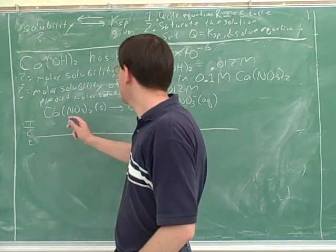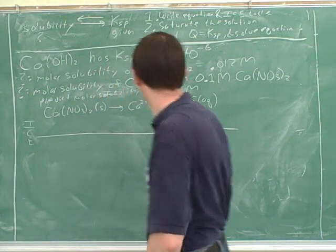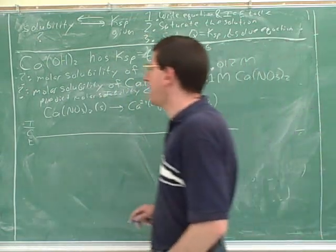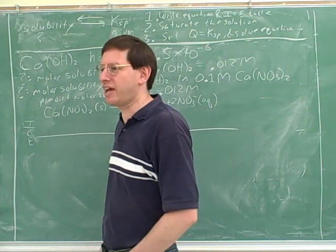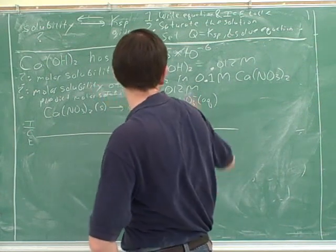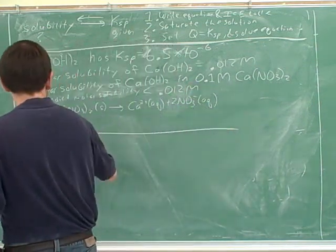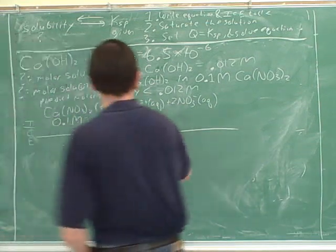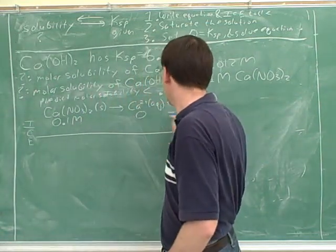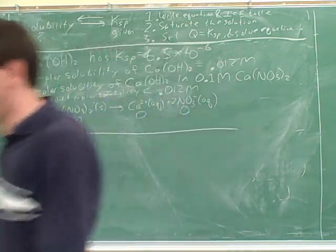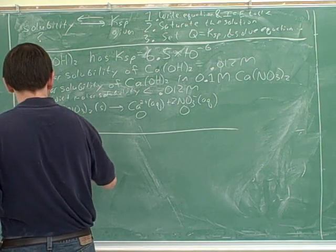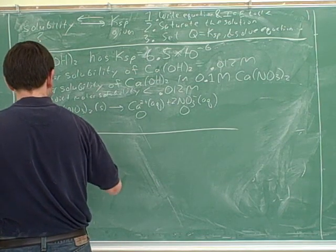Do we know how much calcium nitrate we're starting with initially? Yes, because we're given 0.1 molar. Remember that we only want to use x as a last resort — we only use x as a last resort. In this case we don't need that; we know how much calcium nitrate we're starting with: 0.1 molar. How much calcium ions are we starting with? Zero, because that hasn't had a chance to dissolve yet.